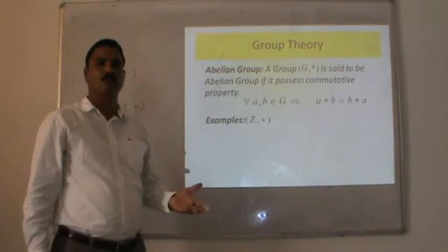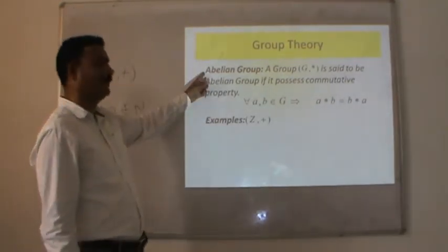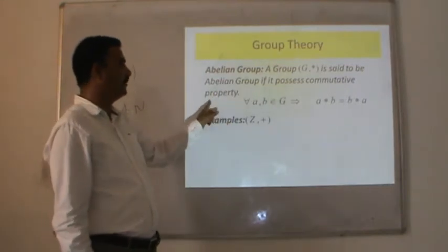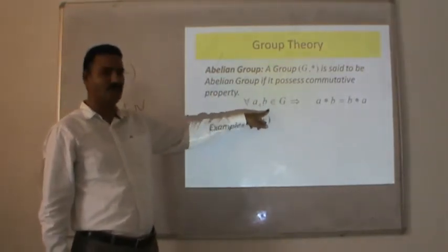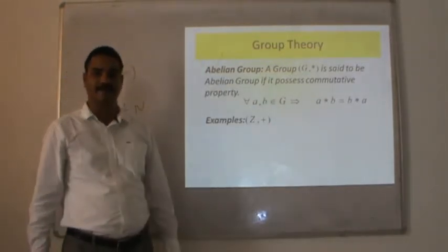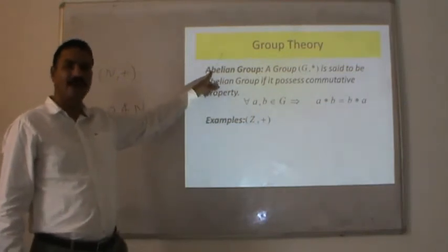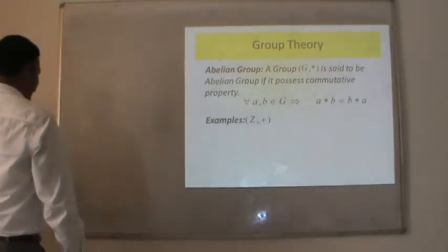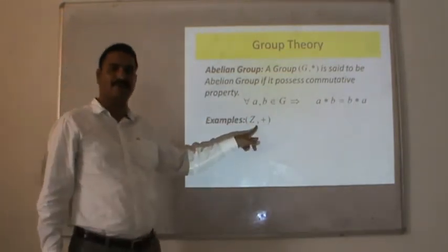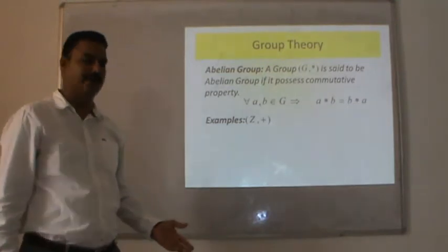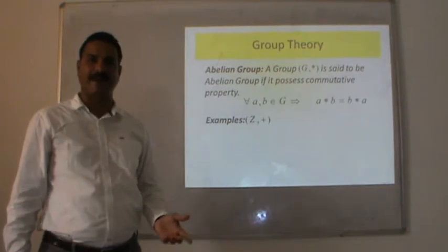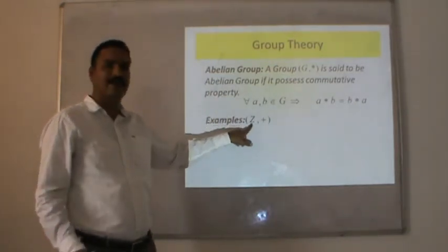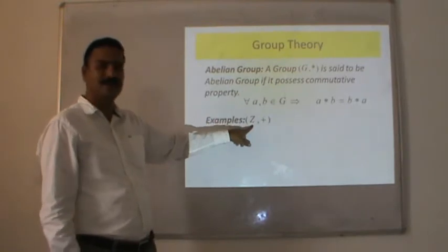Now, if we introduce one more property to the properties of a group, it becomes an abelian group. That additional property is the commutative property. A group (G, *) is said to be an abelian group if for any two elements a, b in G, a * b = b * a. For example, (Z, +) possesses all five properties: closure, associativity, identity, inverse, and commutativity — making it an abelian group.